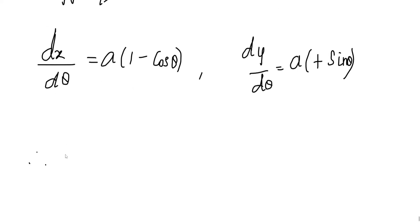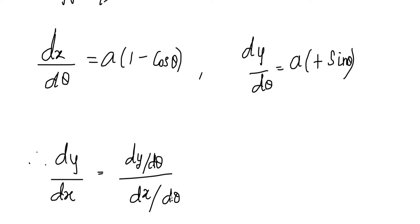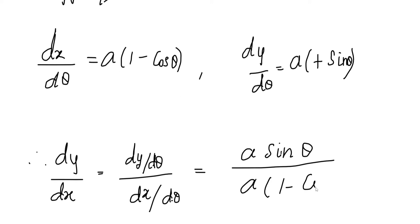Now find dy/dx. dy/dx = (dy/dθ) ÷ (dx/dθ) = (a sin θ) ÷ (a(1 − cos θ)). The a cancels, so dy/dx = sin θ / (1 − cos θ).